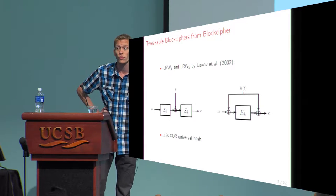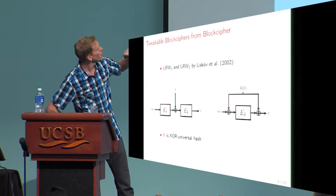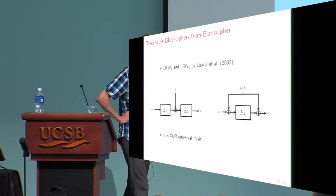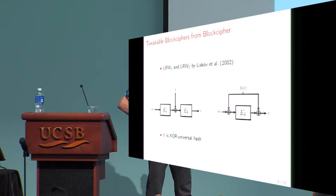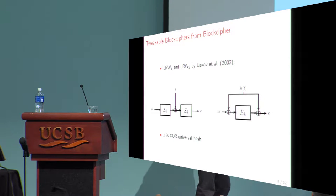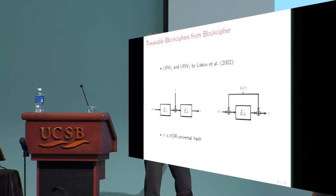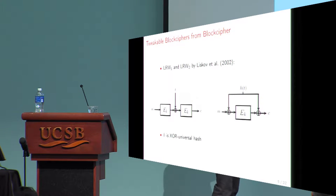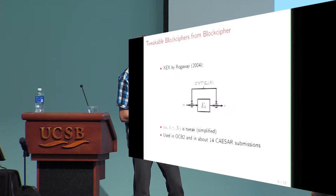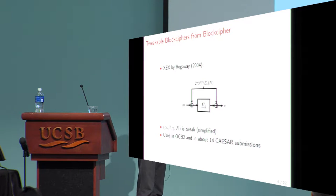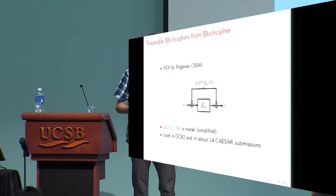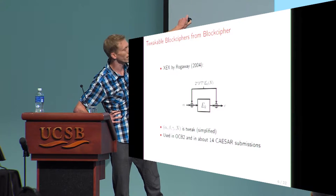In the first formalization of tweakable block ciphers by Liskov et al., they also introduced two tweakable block ciphers based on a normal block cipher. The most interesting one for us is the right one. What we see is that it has a normal block cipher masked by some universal hash function on the left and on the right. It's similar to what was proposed by Rogaway two years later — Rogaway improved the scheme specifically for usage in OCB2.